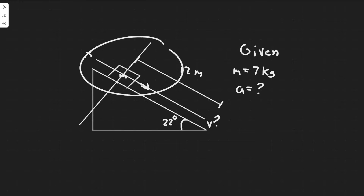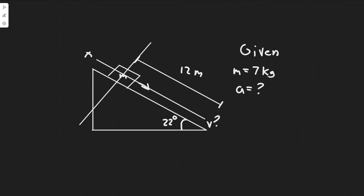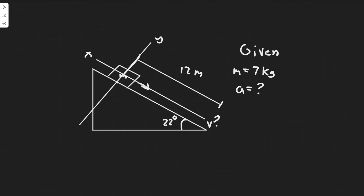The next step is to draw the free body diagram. Whenever you're dealing with a block on a plane, you want to do the free body diagram. We have two forces acting: the normal force and the force due to gravity. The normal force always acts perpendicular to the plane it's on, so it acts along the y-axis. The plane itself is our x-axis, and perpendicular to that is the y-axis. Newton's third law tells us there's an opposite force whenever you touch something.